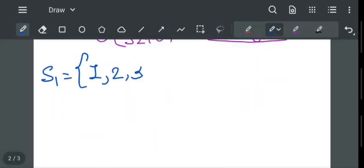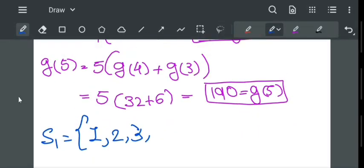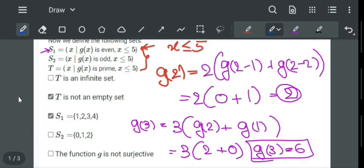For x equal to 3, value is 6, for x equal to 4, value is 32 which is even, and for x equal to 5, value is 190 which is also even. So we got this as s1.